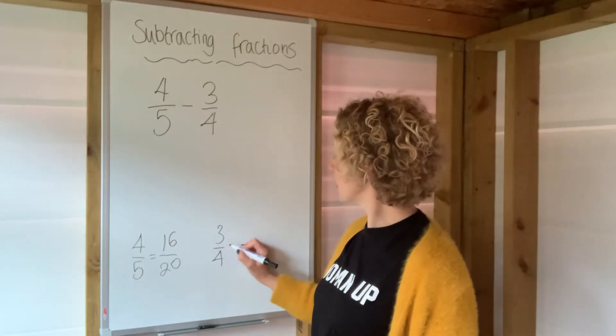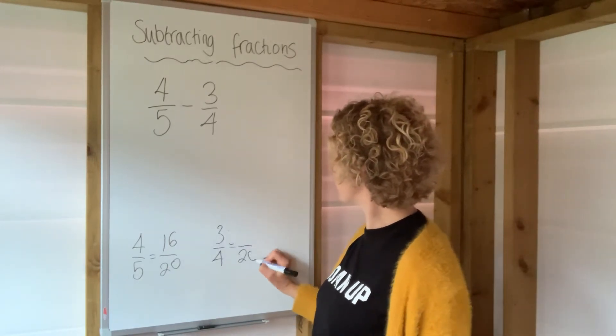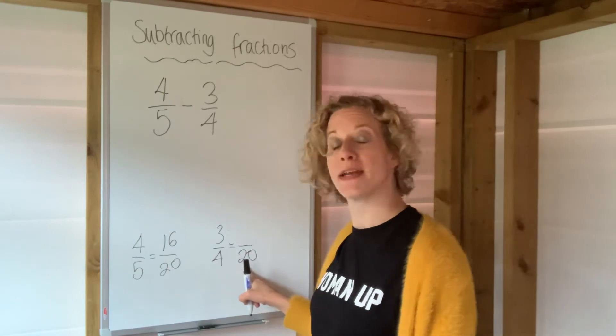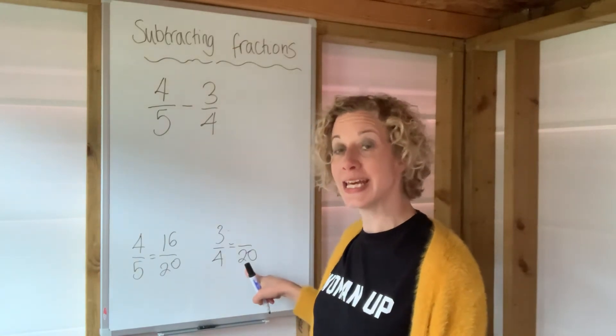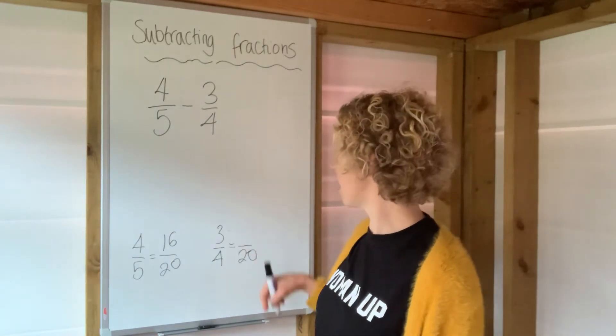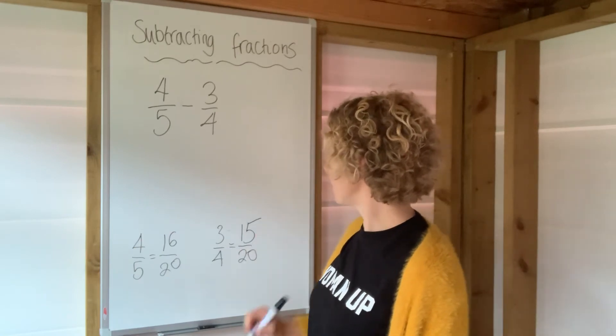Similarly, three-quarters, if I change that into something over 20, I say, what am I timesing four by to get to 20? It's five, so I'm going to times the top by five, which gives me 15.